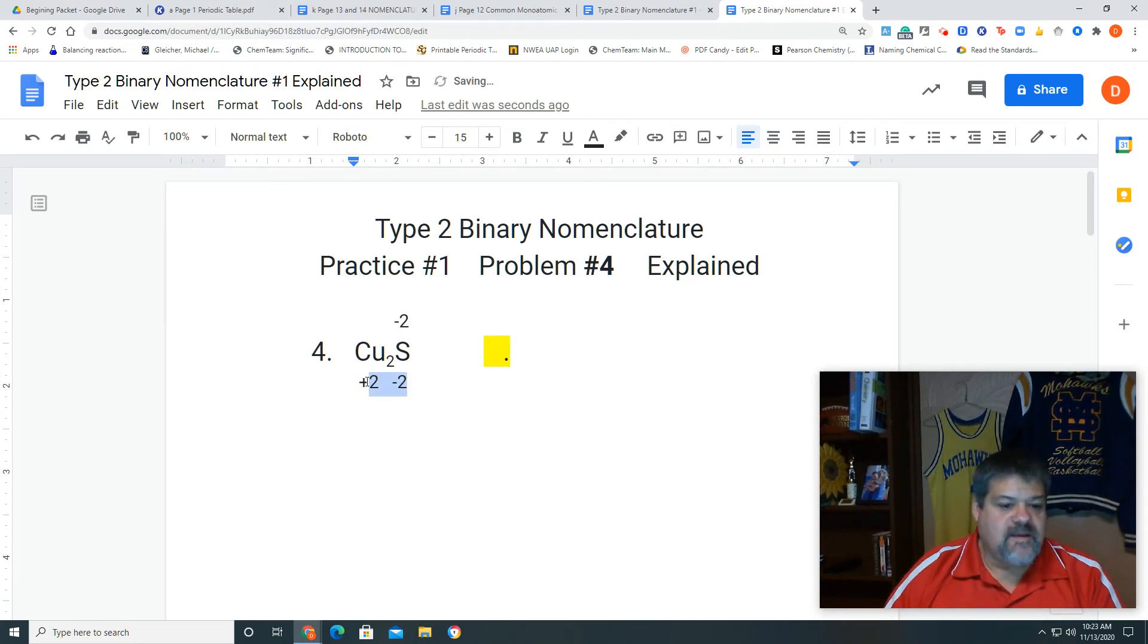Now, because these here are equal but opposite, they have to be that way in order to have a stable compound. What we have to do is take the charge of the copper, that plus 2, divide it by the 2, because we have two of them, and that means our charge for each individual copper is going to be plus 1.